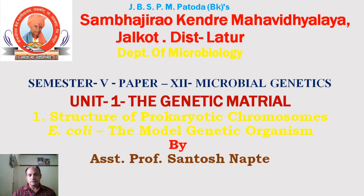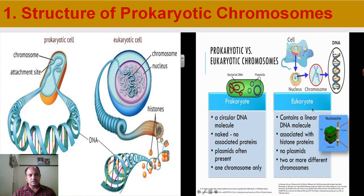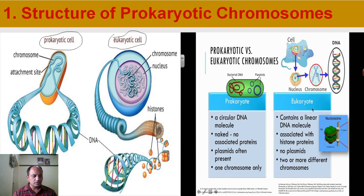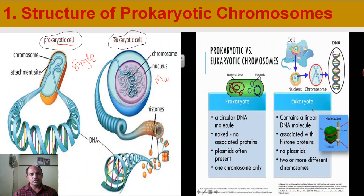Let's start with the structure of prokaryotic chromosome. There are two diagrams here — on the left is a prokaryotic cell and on the right is a eukaryotic cell. If you see the structure of these two cells, there is a difference in the organization of chromosomes. In the prokaryotic cell there is a single chromosome, but in the eukaryotic cell there are many chromosomes present.